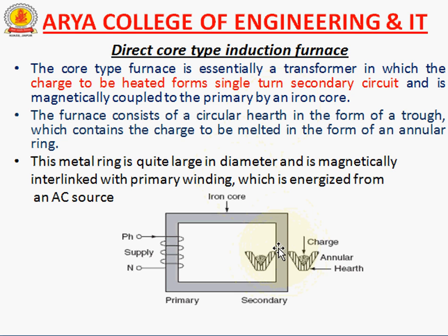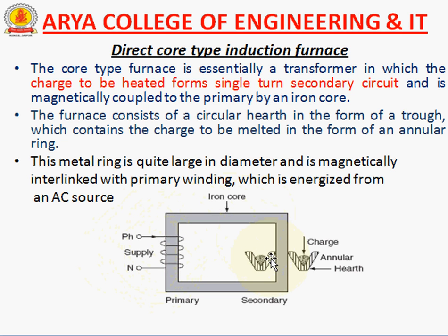The furnace consists of a circular hearth in the form of a trough which contains the charge to be melted in the form of an annular ring. This metal ring is quite large in diameter and is magnetically interlinked with the primary winding, which is energized from the AC source. These are the primary winding connected by the single-phase AC source, and there is the magnetic link from primary to secondary winding.